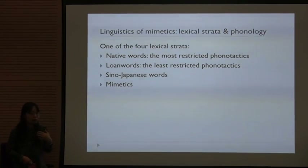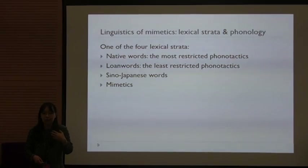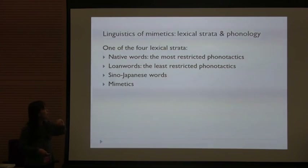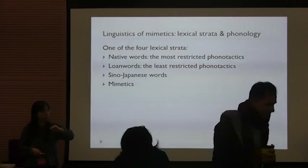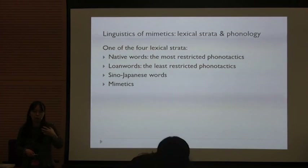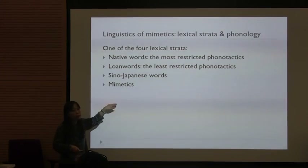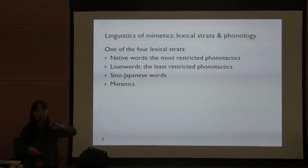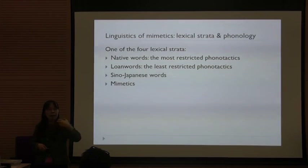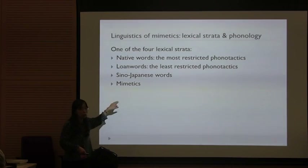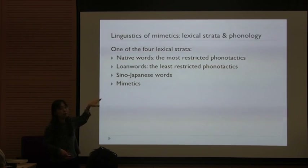I want to introduce the place of mimetics in Japanese linguistics. In Japanese, there are four types of lexicon. We have native Japanese words and loan words. Native Japanese words are most restricted in terms of phonotactics, and loan words are freer — they can use types of sound not used in other words. Mimetics and Sino-Japanese words are somewhere in between. There are some sounds, such as bilabial stop and voiceless sounds, that can appear at word-initial position, which is not the case with native Japanese words at all.